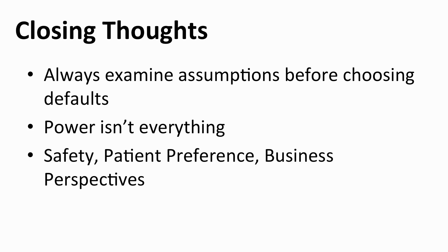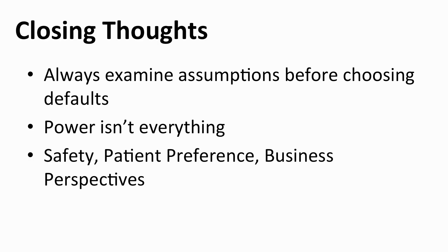Just some closing thoughts. When we think about designs pulled off the shelf, like a one-to-one randomization, we should always think about our assumptions — do they make sense? Maybe the default design was optimal for what it was originally set up for, but your assumptions may not quite match that. Remember that power isn't everything. When talking about a clinical trial, there are other things to consider: safety, patient preferences, and all the other pieces that come into the bigger picture of what you're performing. I hope you found this information on alternate randomization ratios interesting, and thanks for watching.